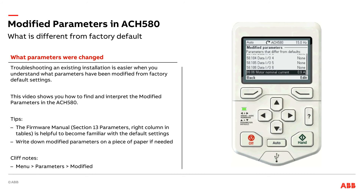As I scroll down past group 58, which are the BACnet settings, I can see that the motor data has been updated. This happens to be my demo case motor, so I had dropped down the horsepower of this drive to match my demo case motor.